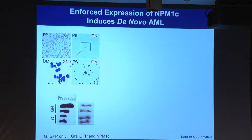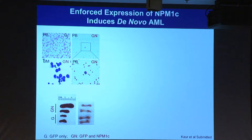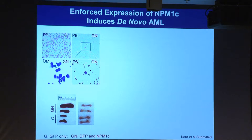Blood smears from control mice look normal, but in the tumor-bearing mice you can see large cells, as AML tends to have blasts in the peripheral blood as well as in the bone marrow. Comparing spleen size, the normal humanized mice have much smaller spleens. The tumor-bearing mice also have pale bones because there are so many tumor cells in the bone marrow, driving the red cells out.